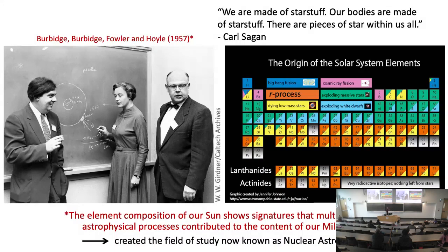What Burbidge, Burbidge, Fowler, and Hoyle said was that if you look at our sun, the element composition shows signatures of multiple distinct astrophysical processes that have contributed to our Milky Way. Looking at the periodic table on the right, color-coded by where elements are dominantly produced — exploding massive stars, dying low mass stars, exploding white dwarfs, the Big Bang — you also see this orange box I've highlighted just named R process, or the rapid neutron capture process. It's a process where nuclei can capture neutrons very quickly to produce heavier elements.